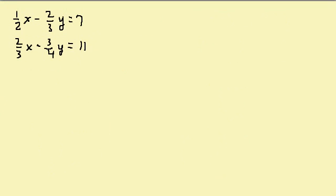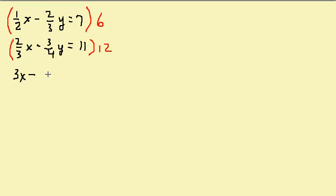Now let's look at another problem with fractions as the coefficients in front of the variables. To solve this I want to get rid of the fractions, so I multiply the first equation by the common denominator of 3 and 2, which is 6. Then I multiply the second equation by the common denominator of 3 and 4, which is 12. This gives me 3x minus 4y equals 42, and 8x minus 9y equals 132.